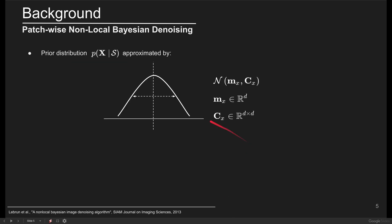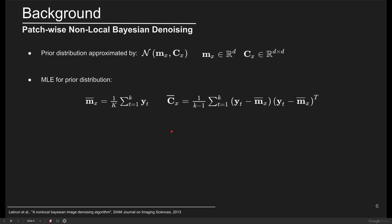In non-local Bayesian filtering, the prior is approximated by a multivariate Gaussian distribution parameterized with its mean and covariance, and the maximum likelihood estimates are used to find the mean and covariance from the existing samples.